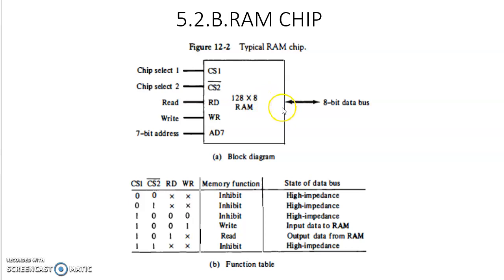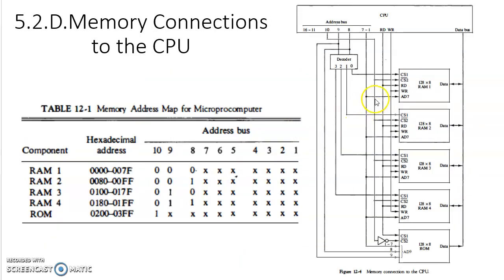Now, let us look at the memory connections, how the main memory is constructed using both RAM and ROM chips. Here, just for the example sake, in the text book, 1 KB memory is constructed. 1 KB of main memory is constructed with the help of 4 RAM chips, 4 RAM chips of size 128, and one 512 chip. There is a mistake in the text book. Please mind that.